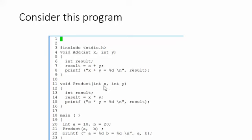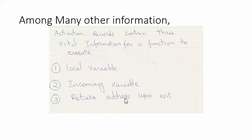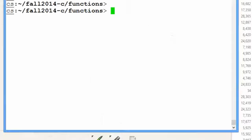How does it know that these are local variables x and y? To get to that, let's talk about activation records. Activation records are the vital, important data structure functions use to execute and manage local variables, incoming variables — the parameters we talked about — and the return address upon exit. When the function is done, where do the instructions go to continue? It has to know where it should go after it's done.